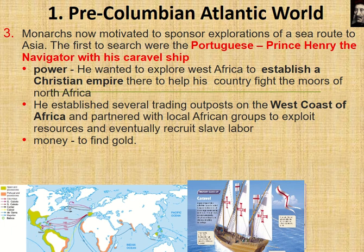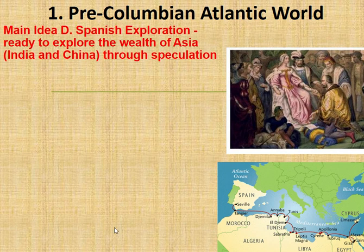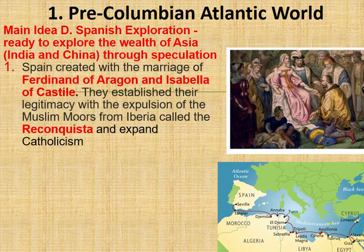The Portuguese hugged along the African coast and established colonies there. Portuguese explorer Bartolomeu Diaz sailed around the southern tip of Africa, extending Portugal's interests from the west coast — that was Prince Henry — to the east coast of Africa. Once on the east coast, establishing ports along the way to stop and refuel, they could gain access to India and Asia. Portuguese exploration was really driven by the desire to access Asian products and wealth.